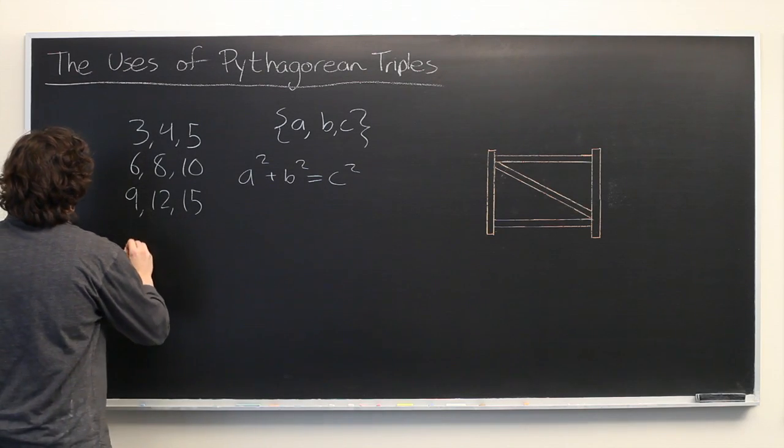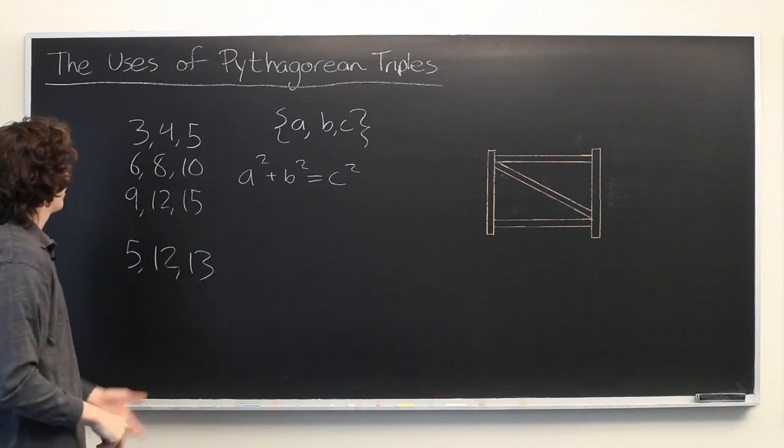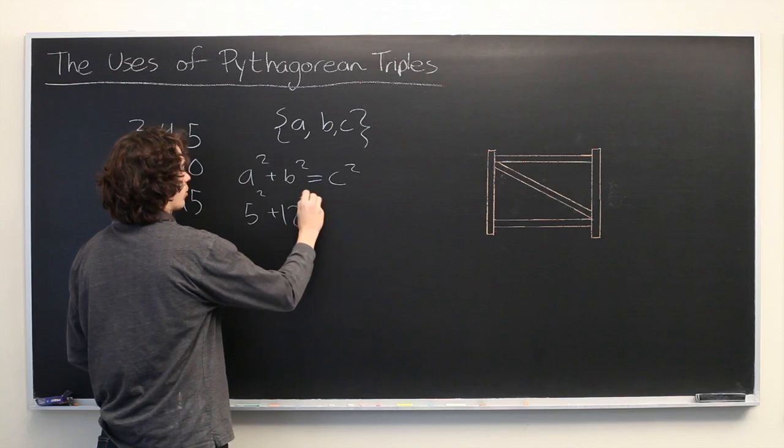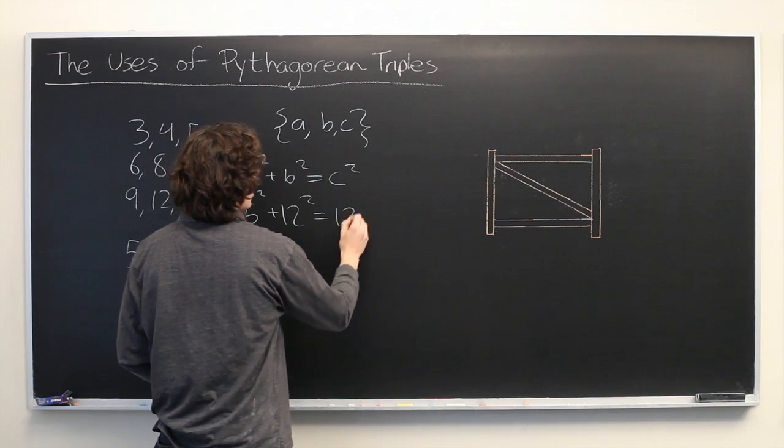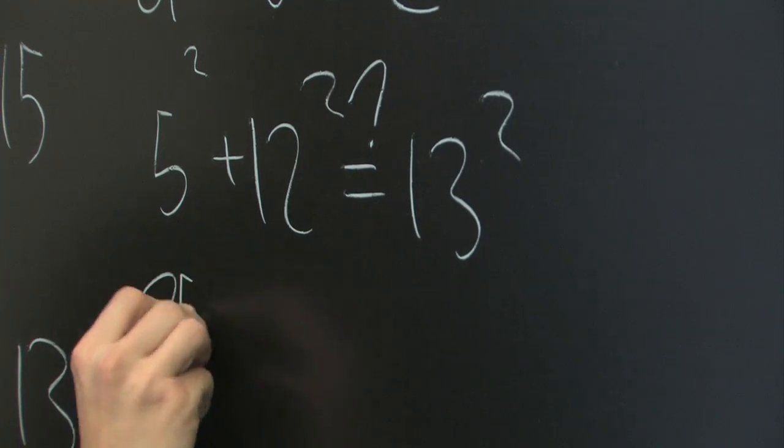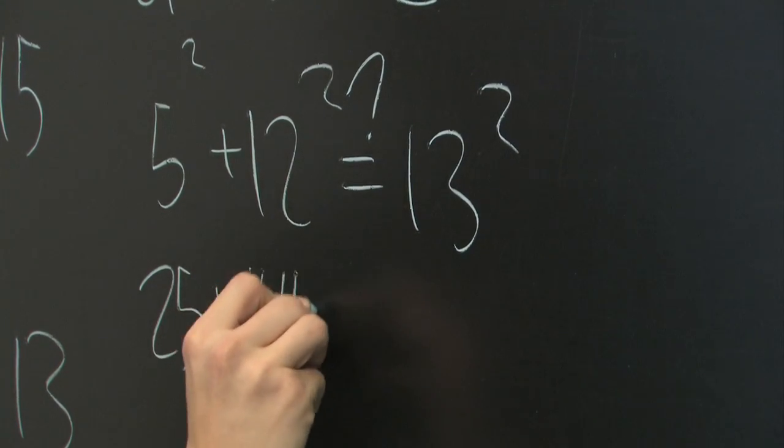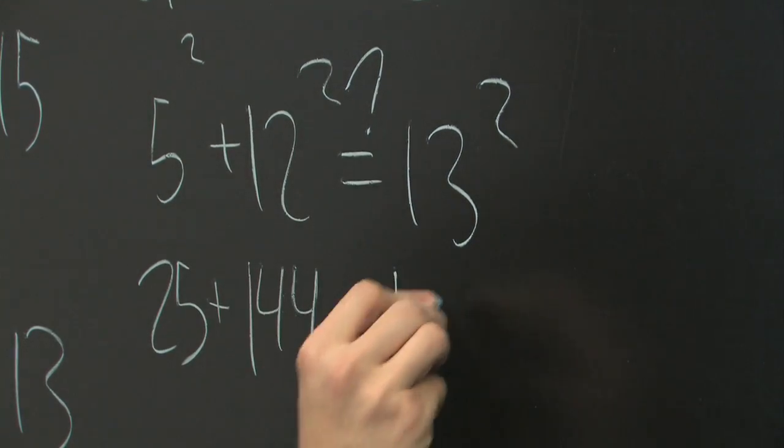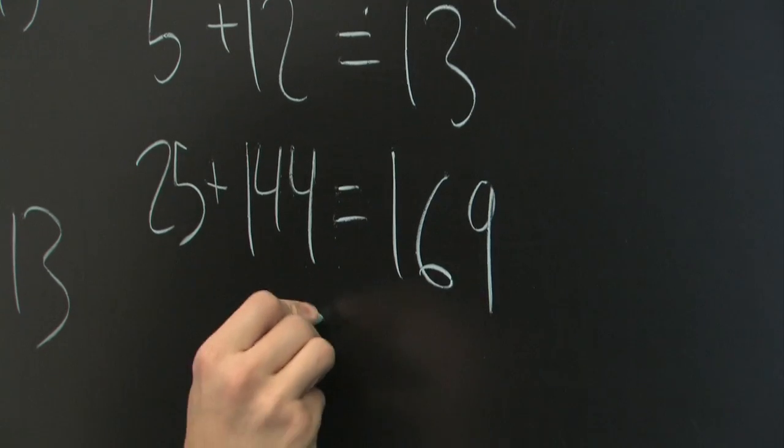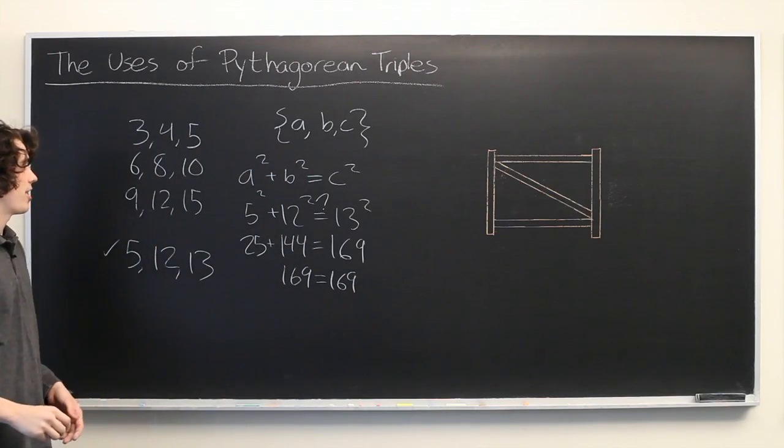Another example is 5, 12, 13. If you want to work it out you see that 5 squared plus 12 squared equals 13 squared. If you're not sure, just do the computation. 5 squared is 25, 12 squared is 144, and 13 squared is 169. And it is indeed true that 169 is equal to itself. So that is a Pythagorean triple.